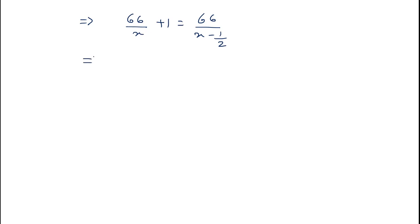After solving this quadratic equation, we'll be getting 66 plus x upon x is equal to 66 upon 2x minus one upon two. This denominator ka two goes to the numerator, and it will become 66 plus x upon x is equal to 66 into 2 divided by 2x minus one.